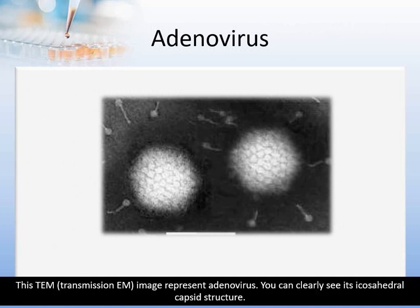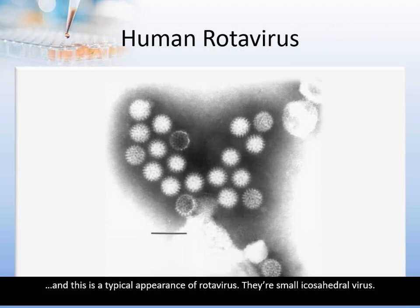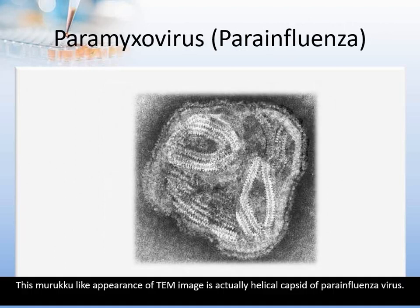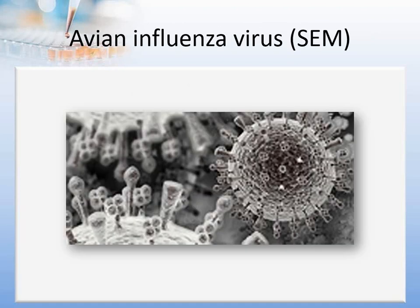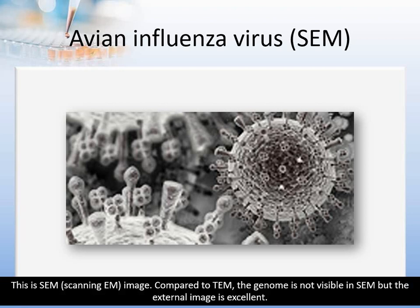This TEM or transmission electron microscope image represents adenovirus. You can clearly see its icosahedral capsid structure. This is a typical appearance of rotavirus — they are small icosahedral viruses. This murukul-like appearance of the TEM image is actually the helical capsid of parainfluenza virus. This is a scanning electron microscope or SEM image. Compared to TEM, the genome is not visible in SEM, but the external image is very detailed, as you can see on the figure.